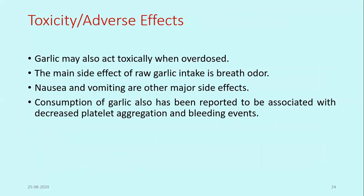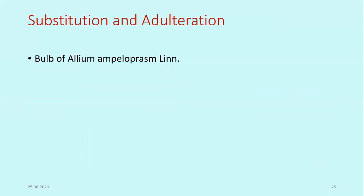Regarding toxicity and adverse effects, garlic may act toxic when used in overdose. The main side effect of raw garlic intake is bad breath odor, nausea, and vomiting. Ingestion of garlic has also been reported to be associated with decreased platelet aggregation and bleeding events. Bulbs of other Allium species are also used as substitution and adulteration of garlic.